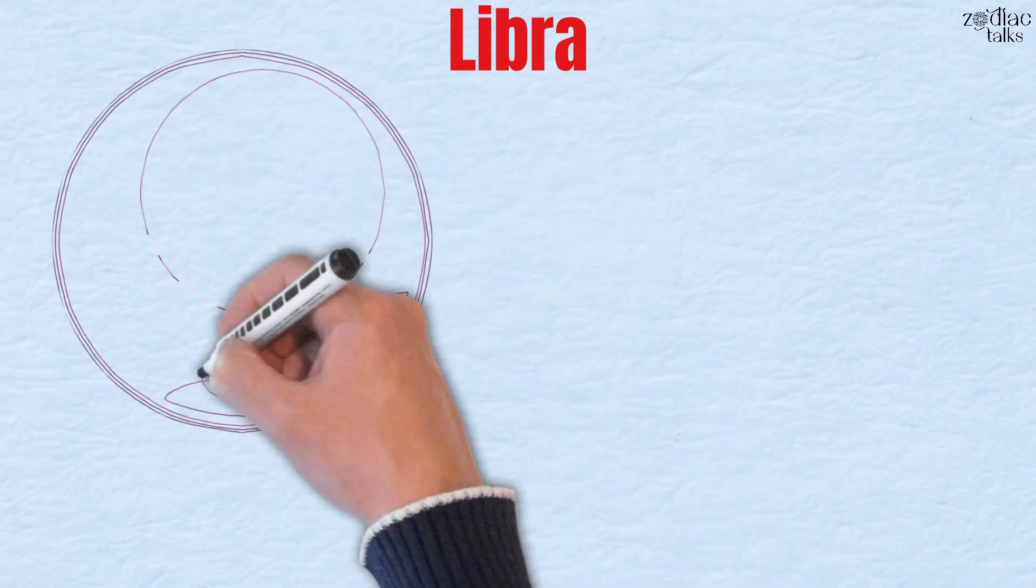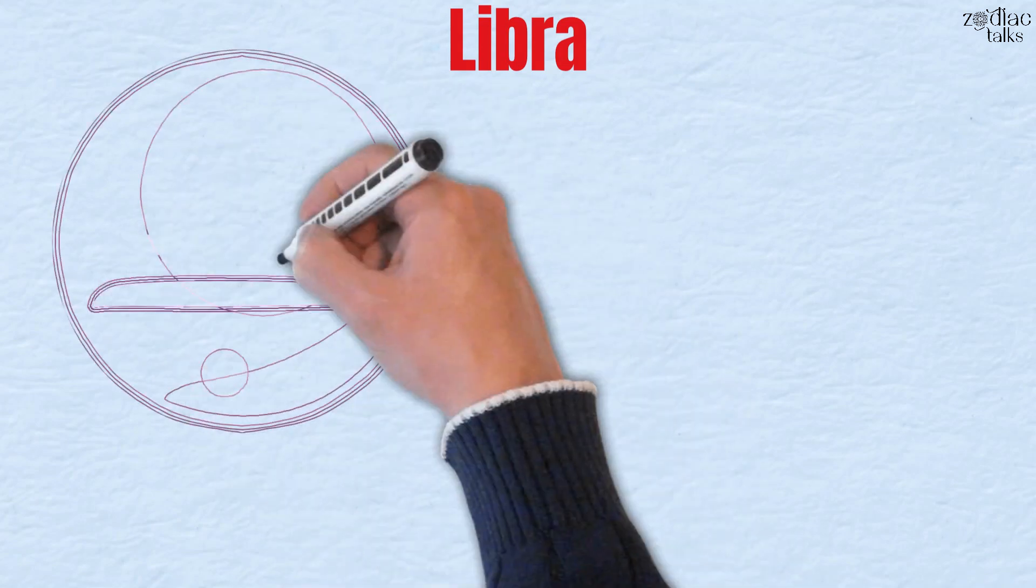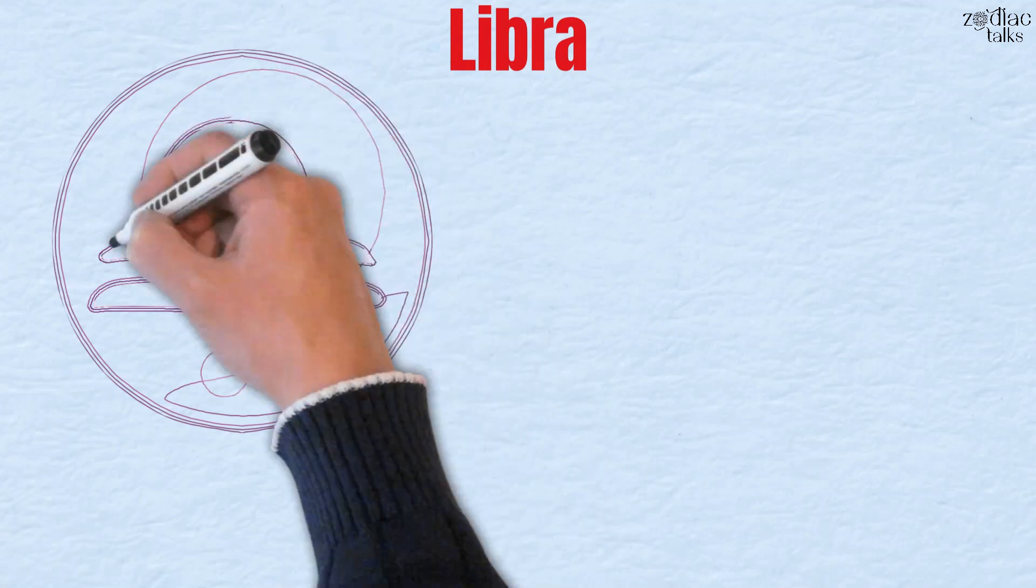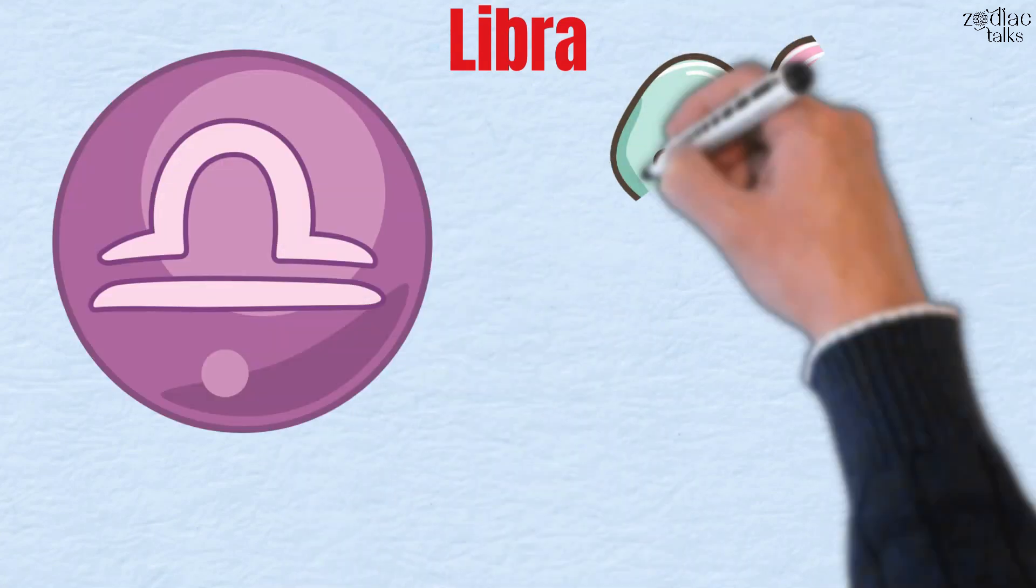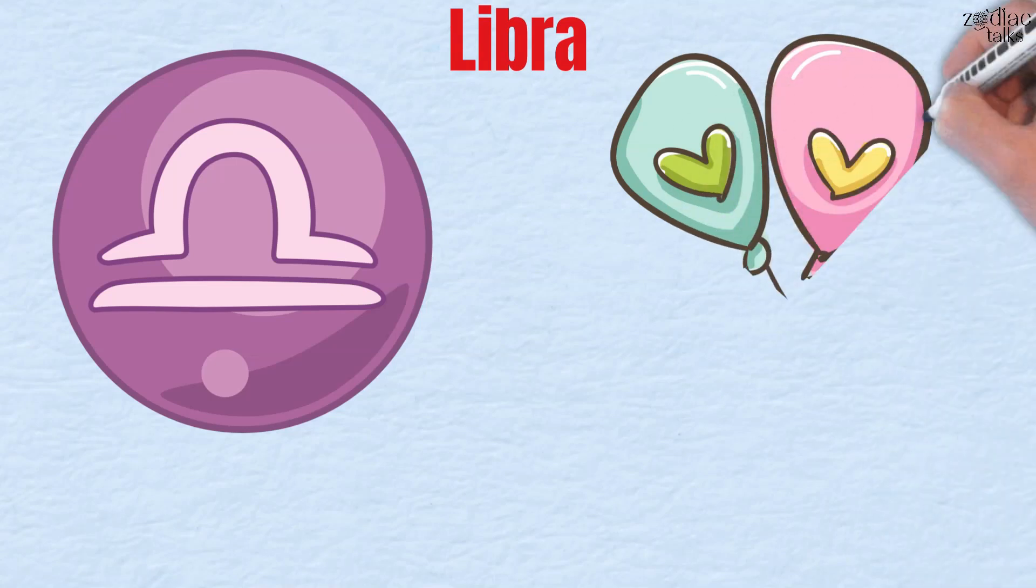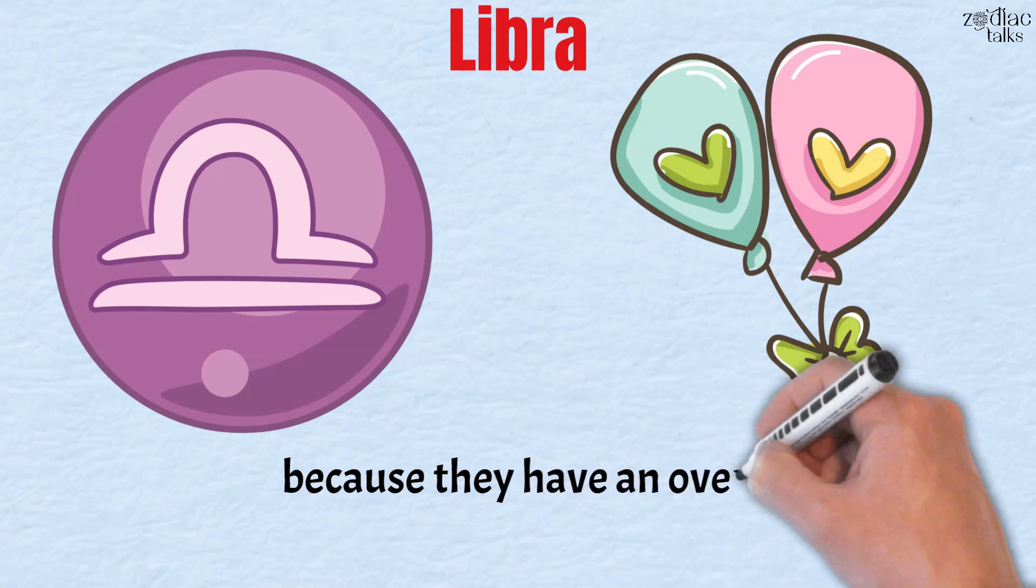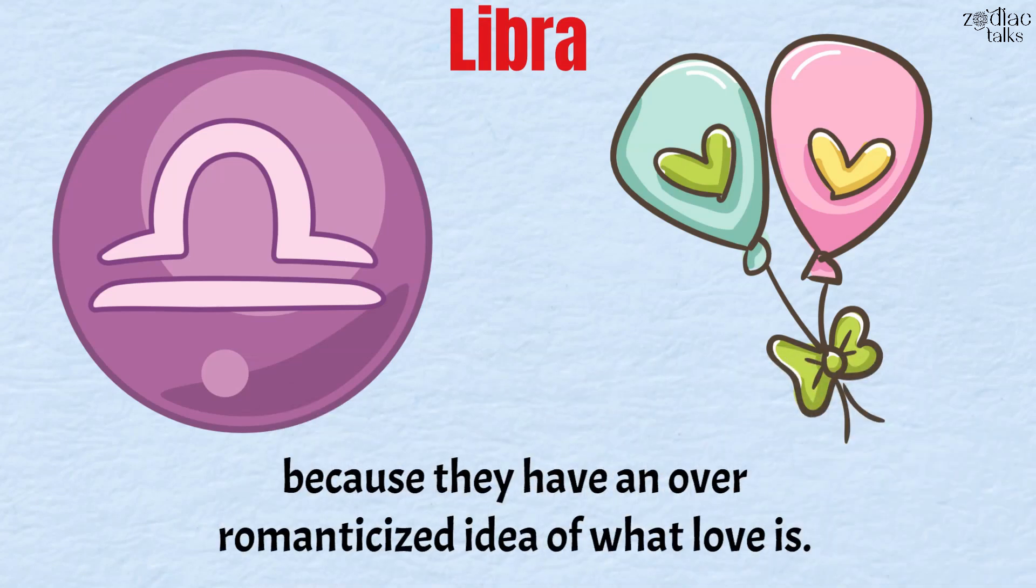Number 2: Libra. Libra is ruled by Venus, which can lend the traits of excess and indulgence, especially in regard to love and romance. A hopeless romantic, Libra is always searching for the love of their life, but they never find them because they have an over-romanticized idea of what love is.